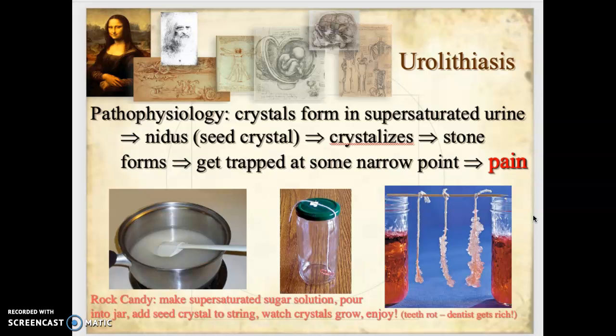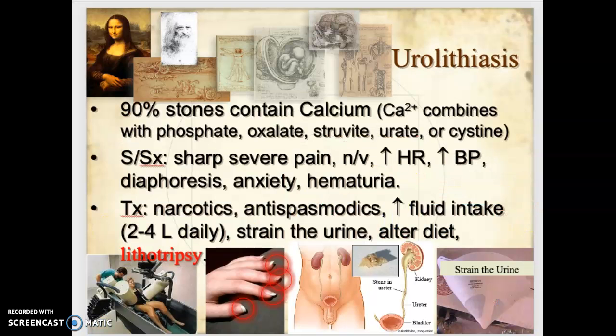That's exactly the pathophysiology of kidney stones. Crystals form in super-saturated urine. Usually it's a younger male who doesn't drink enough fluids, so their urine becomes very concentrated in the kidneys. A little nidus or seed crystal — a small piece of calcium oxalate or calcium struvite — forms, and all that super-saturated urine crystallizes around it, forming a stone. As the stone grows, it gets trapped somewhere in the ureter, causing extreme pain.